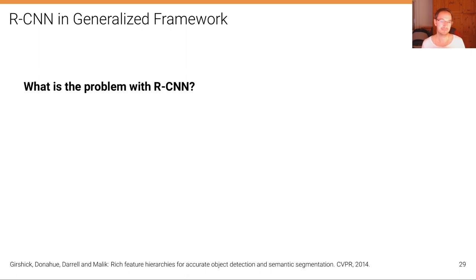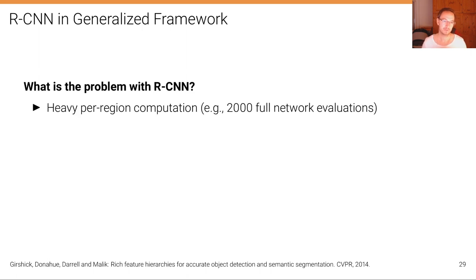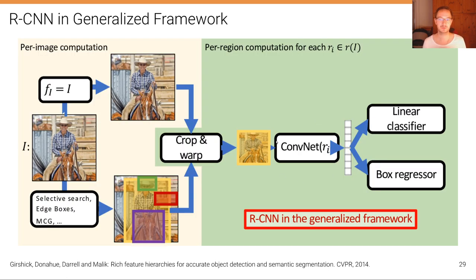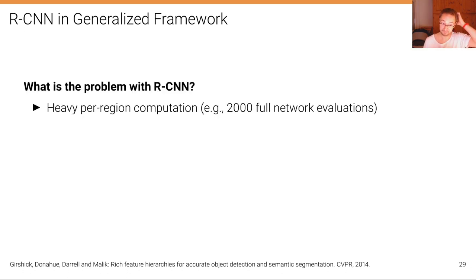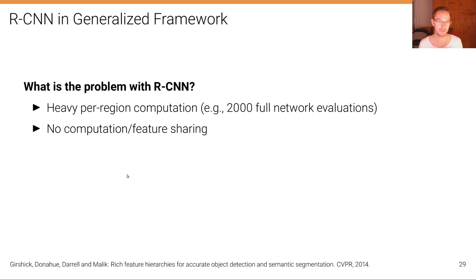What is the problem with RCNN? The first problem is heavy per-region computation — we need 2000 full network evaluations. For each of these proposals, we need to run a full AlexNet or ResNet architecture to make a prediction, so it's quite slow. We also don't utilize computational feature sharing because we really independently run 2000 inference processes, 2000 inputs through this network.